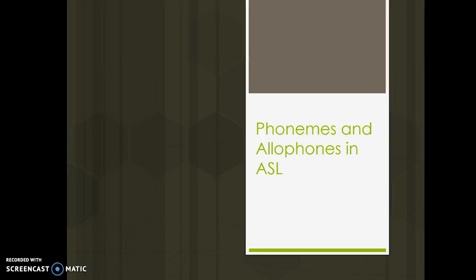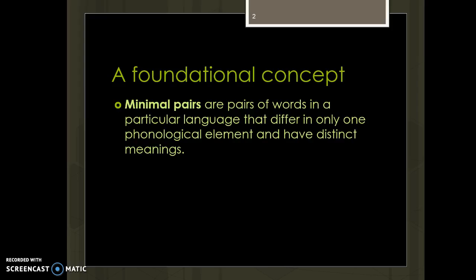Let's take a look at the important difference between phonemic and allophonic variation in language. Before we get into the difference between phonemes and allophones, let's take a second to understand an important concept: the minimal pair. A minimal pair is an instance where two words differ by only one sound, yet everyone who's a native speaker of the language hears those as two separate words.